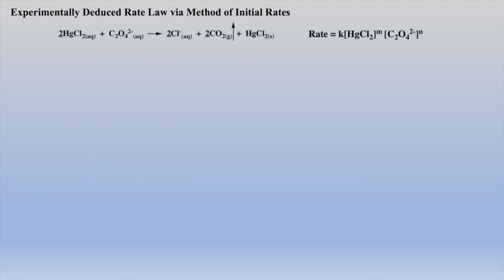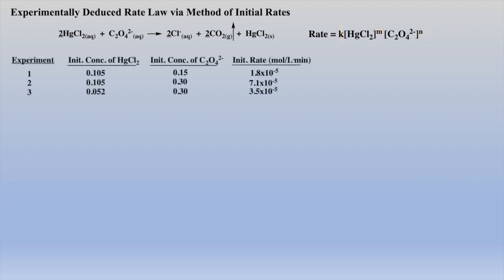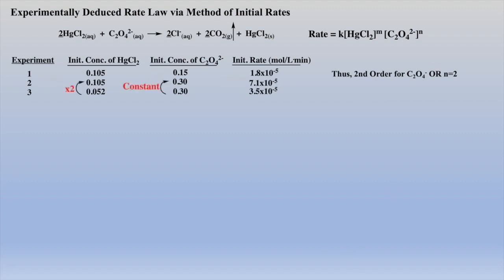So let's try this method of inspection in the next example. Similar to the last problem, our goal will be to experimentally determine the rate constant K and the order of each reactant, N and M, by simply examining the data of three different experiments. If the concentration of mercury chloride is constant and the concentration of oxalate is doubled, the rate quadruples, which indicates second order with respect to oxalate. Next, when oxalate is constant and mercury chloride is doubled, we see that the rate also doubles, which means first order with respect to mercury chloride.